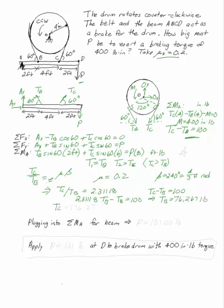Substituting again, TC is 176.27. Now I can come up here to my sum of the moments at A and solve for P. P is 131.00 pounds. And then answer the question. Apply P is 131 pounds at D to brake the drum with 400 inch-pounds of torque.